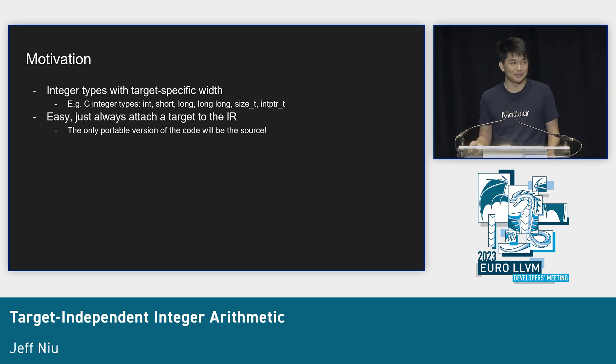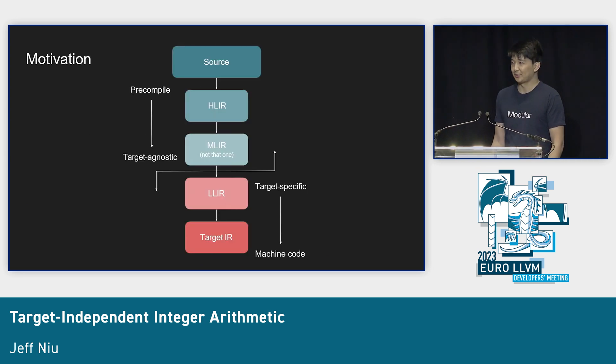The solution seems easy: just put a target on the IR, and now we know how big int is. But there are problems with this. If we want progressive compilation where we precompile source code to a particular level and distribute it, and we attach a target to the IR from the beginning, the only portable version is the source. You can't really distribute C++ source code and JIT it. I mean you can, but it's not fantastic.